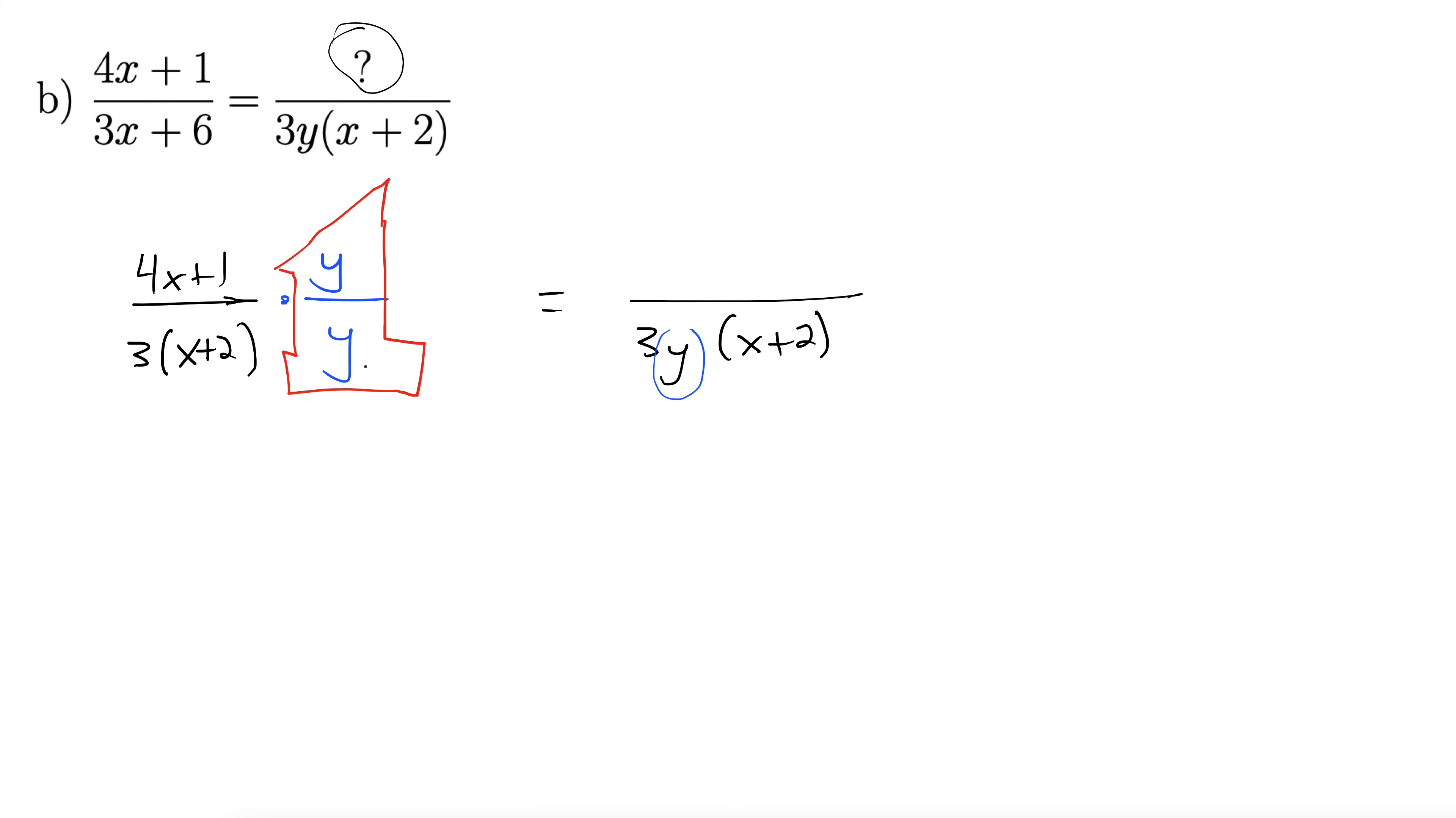So now we have the same denominator, 3y and x plus 2. So, we just multiply the numerators across. Make sure, when we're multiplying, we're multiplying this whole thing. So, I'm going to put my safety parentheses around these because this y applies to everything. So, y, 4x plus 1.